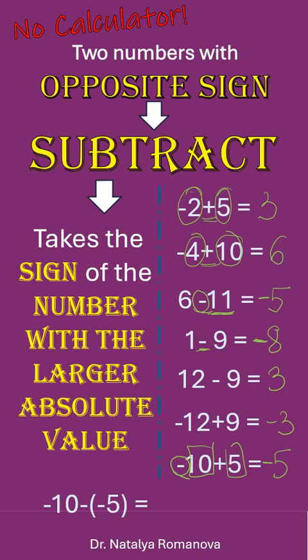We have an interesting situation with negative 10 minus negative 5. Minus minus gives us plus, so we have negative 10 plus 5, it is negative 5.